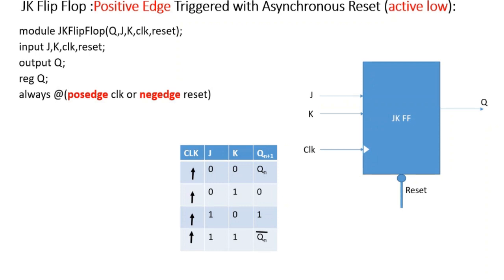Then comes the always block, and in the sensitivity list we will have the clock with posedge because we are designing a positive edge triggered flip-flop. Along with this we have to pass the reset signal also in the sensitivity list because the reset signal is asynchronous. This we discussed in detail when we designed the D flip-flop — whenever the reset signal is asynchronous we have to put it in the sensitivity list.